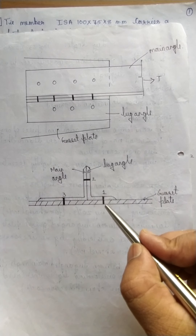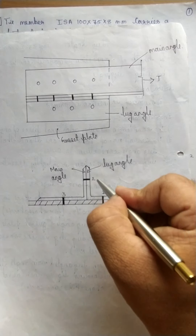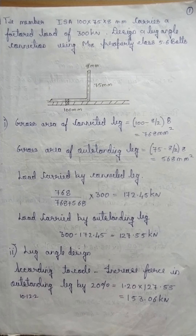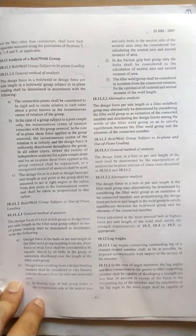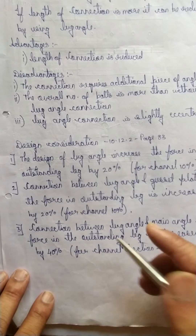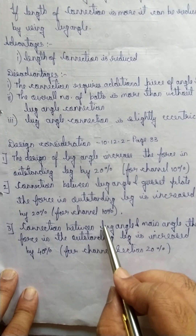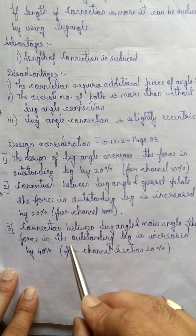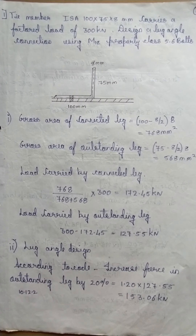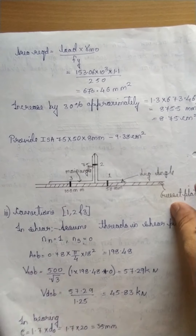We have to design three connections. The connections are: connection between the lug angle and the gusset plate, and between the lug angle and the main angle. The provisions are given in clause 10.12.2. Connection between lug angle and gusset is increased by 20 percent, and connection between lug angle and main angle has the force increased by 40 percent.